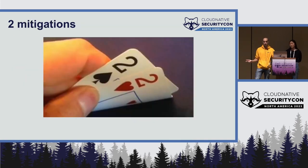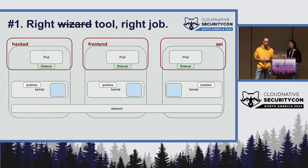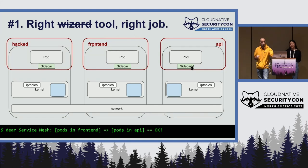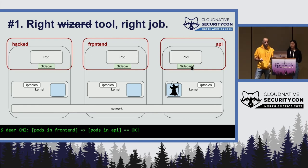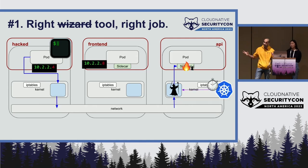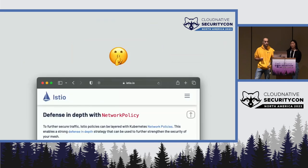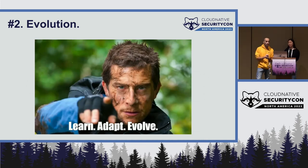There are two ways to deal with this problem. Solution number one: follow the Unix philosophy — a tool should do one thing and do it well, and you should be able to use your tools together. Use your service mesh to enforce layer seven policy at the sidecar, and use your CNI to enforce layer four policy in the kernel. An attacker with a stolen client cert will be stopped by your CNI because they're coming from the wrong IP address, while an attacker with a stolen IP address will be blocked by the sidecar proxy because they lack the right mTLS client cert. This is exactly what Istio has recommended for years — defense in depth is not a new idea.